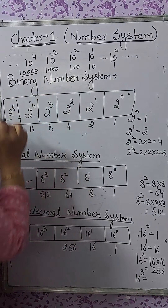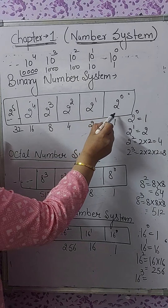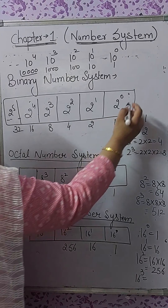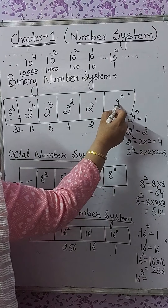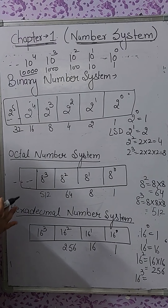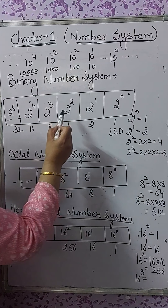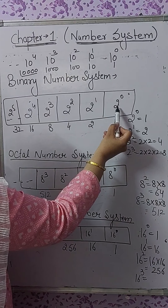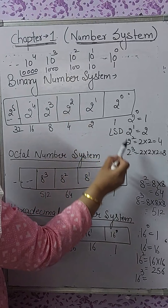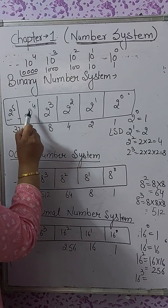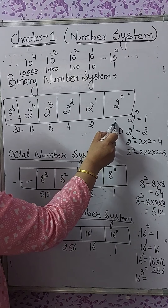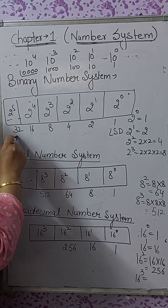Similarly, the binary number system has base 2, so its positional values are 2 raised to the power 0, 2 raised to the power 1, 2, 3, 4, 5, and so on. The least significant digit has a positional value of 2 raised to the power 0. So the positional values are: 2 raised to 0 is 1, 2 raised to 1 is 2, 2 raised to 2 is 4, 2 raised to 3 is 8, 2 raised to 4 is 16, then 32, and so on. This means its positional places are 1's, 2's, 4's, 8's, 16's, 32's, and so on.